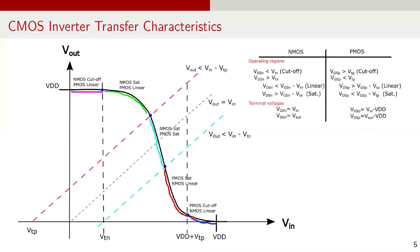Now let's look at the other end of the graph, when VIN is between VDD plus VTP and VDD. The output voltage in this case is nearly 0, and PMOS is in cutoff region as VGS is greater than VTP. For PMOS, VGS is VIN minus VDD, and since VIN is a value close to VDD, VGS is almost near 0. NMOS is on because VGS is greater than VTN — VGS is VIN, which is a high value and much higher compared to the threshold voltage. Furthermore, NMOS is in linear region because VDS is less than VGS minus VTN. VDS is Vout, which is nearly 0, while VGS is nearly VDD, so VDSN is a much smaller value compared to VGS minus VTN. This segment of graph is highlighted in blue.